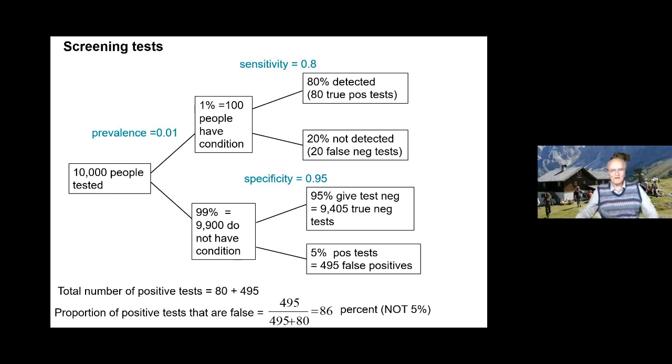The proportion of tests that are false is 495 false positives divided by the total number of positives, which is 86%. 86% of false positives is pretty disastrous, and it's not 5%.